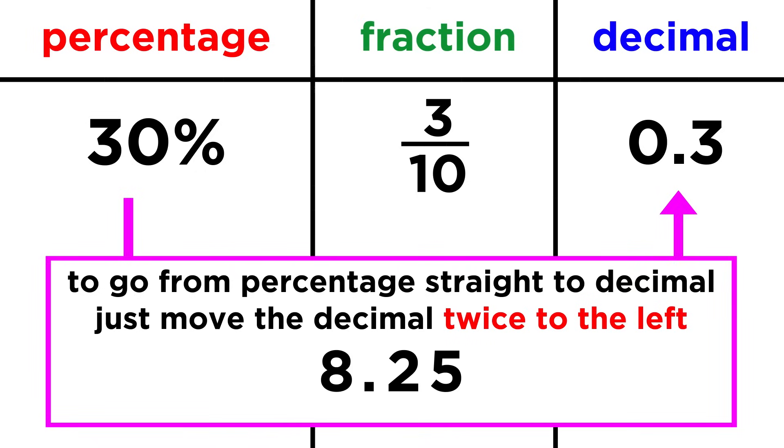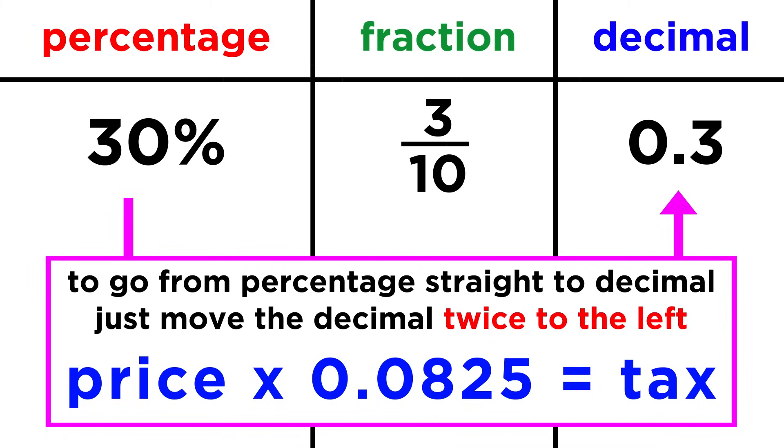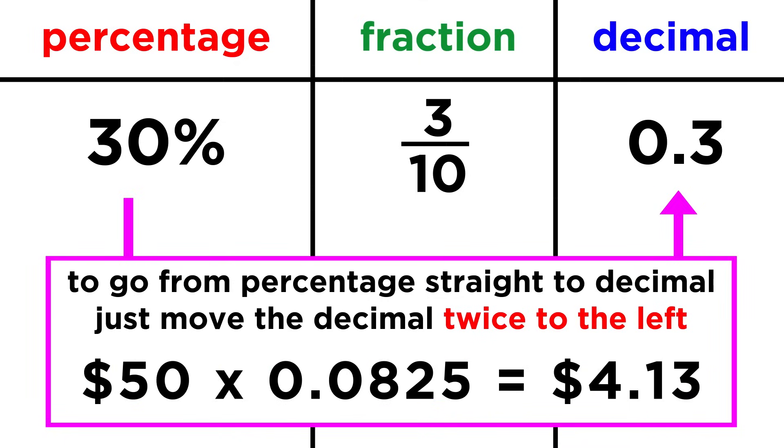We could do the same with an eight point two five percent sales tax. We move it once, and then if we have to move it again but there are no more numbers, just put a zero. And there we have zero point zero eight two five, or the sales tax expressed as a decimal. This is useful, because if you want to compute the sales tax on an item, you can just multiply its price by this number, so a fifty dollar shirt would have a sales tax of four dollars and thirteen cents.